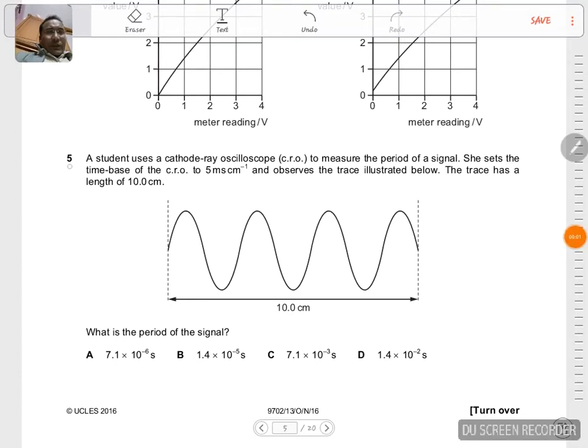This is question number five of 2016 October November paper one three. A student uses a cathode ray oscilloscope (CRO) to measure the period of a signal. She sets the time base of the CRO to five milliseconds per centimeter, which means one centimeter is equal to five milliseconds, and observes the trace illustrated below.